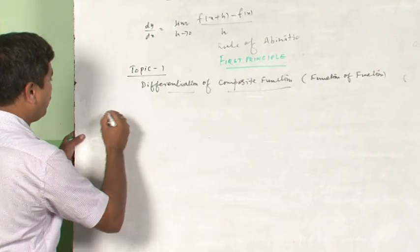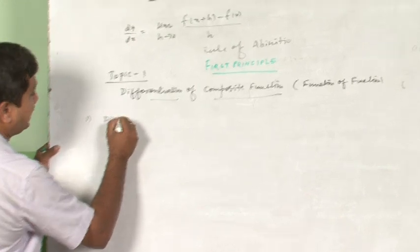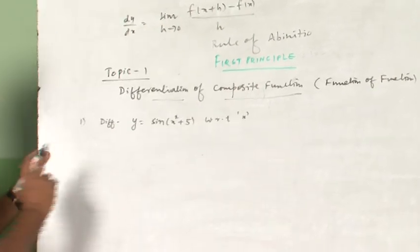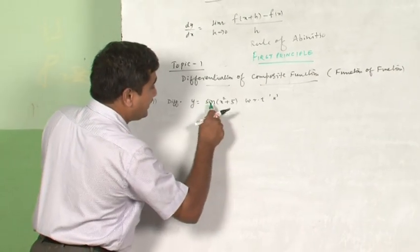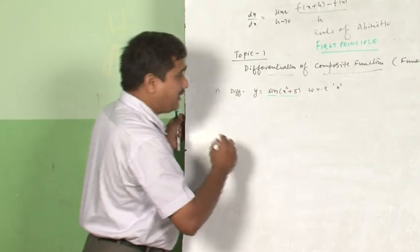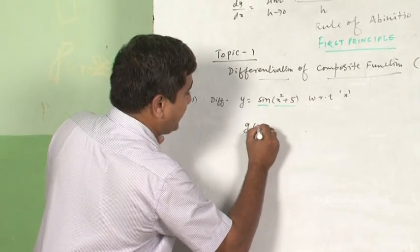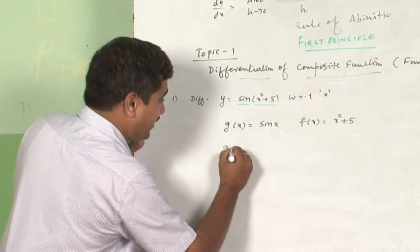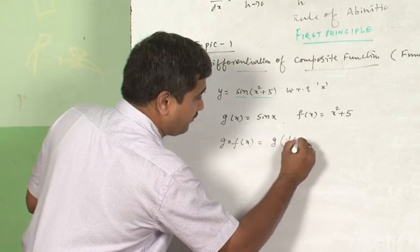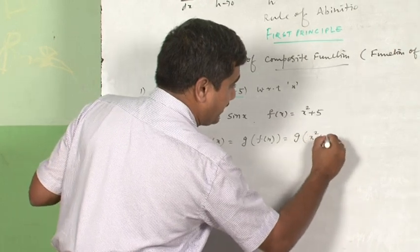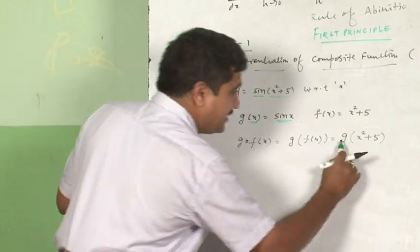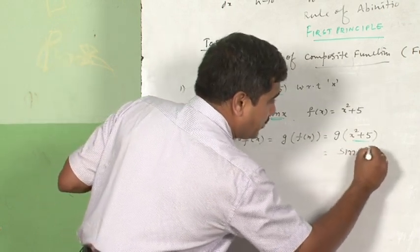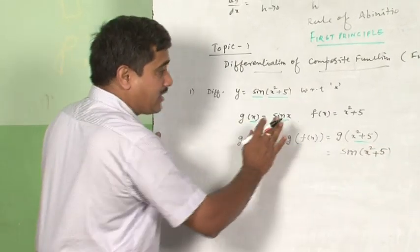Let me take a small problem to help you understand. Differentiate y = sin(x² + 5) with respect to x. Here I find two different functions: one is the sine function and the other is the algebraic function x² + 5. I take g(x) = sin x and f(x) = x² + 5. Now g∘f(x) = g(f(x)) = g(x² + 5) = sin(x² + 5). So this is definitely a composite function.